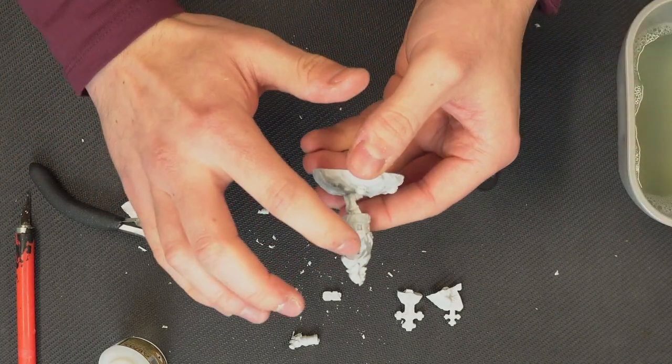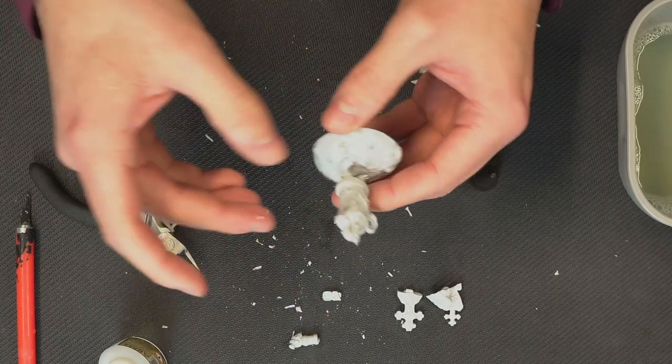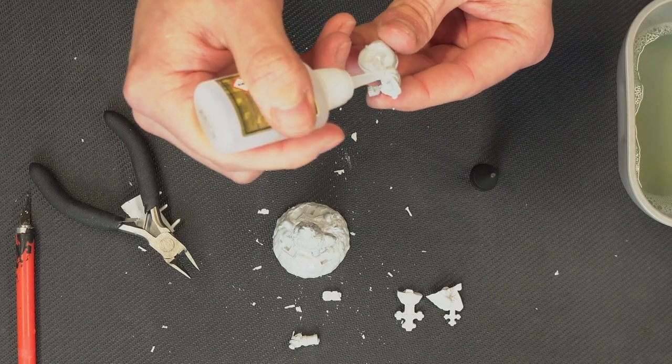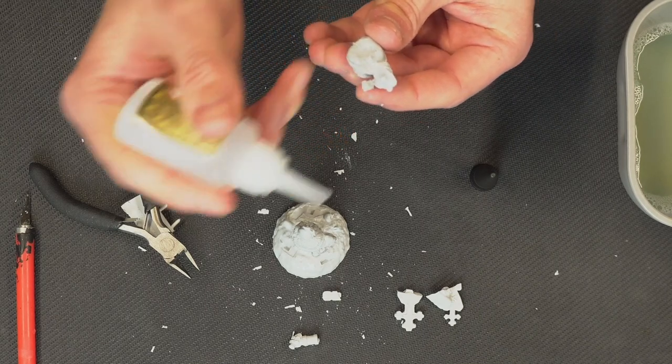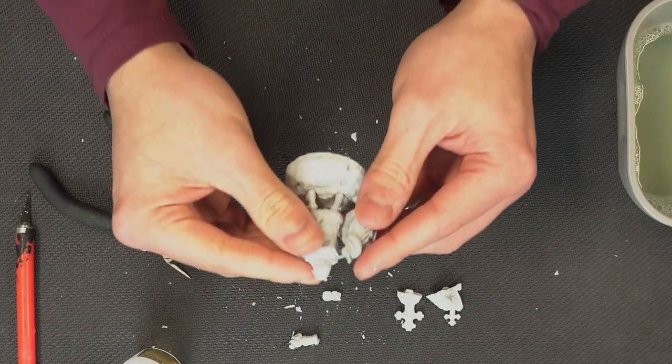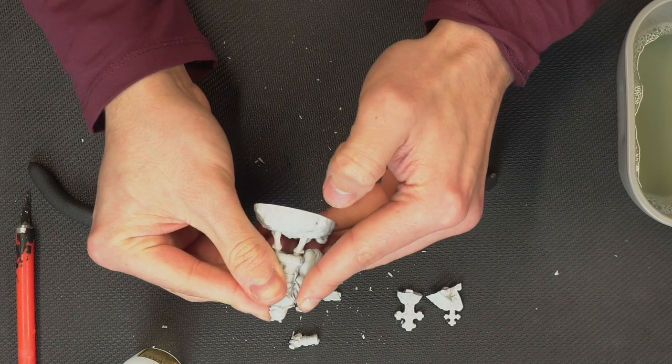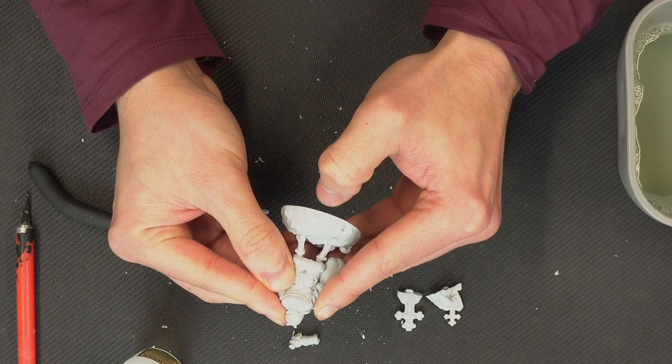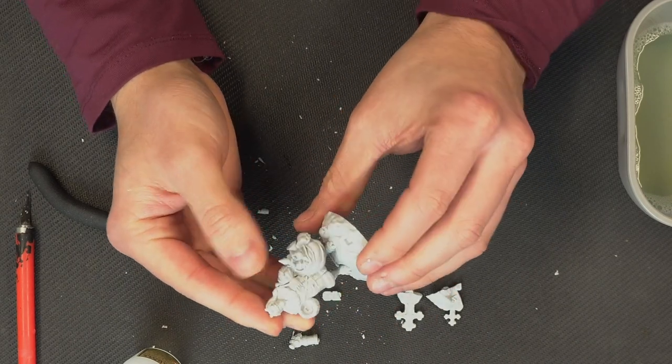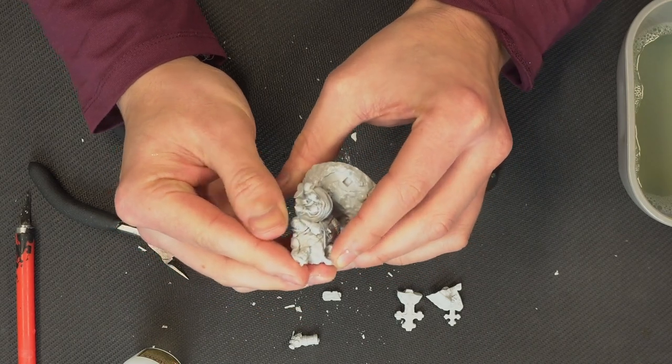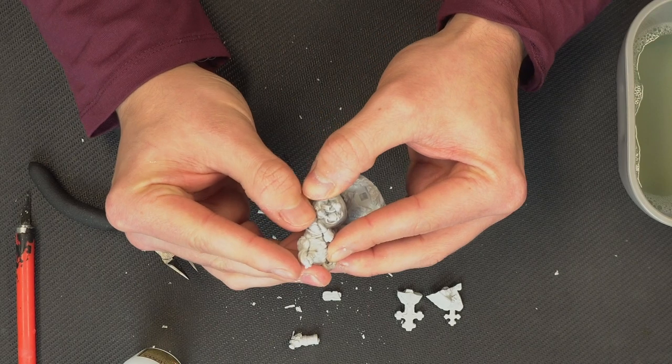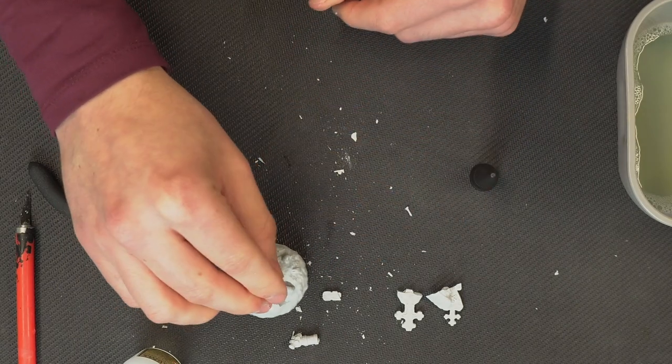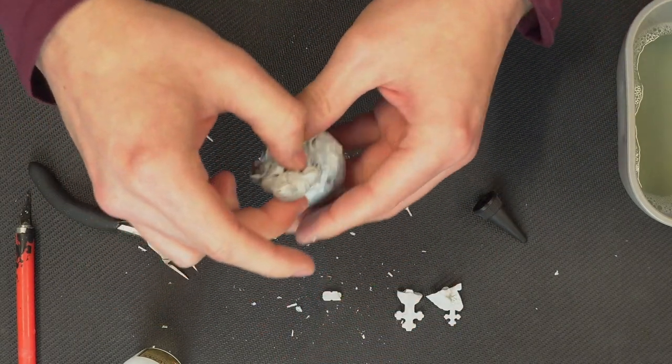Now we're going to move on to his arm. So again, we're just going to put a little bit of water in there, and then we're just going to go in, line it up, and then it just sits inside those two pegs that are on the body.